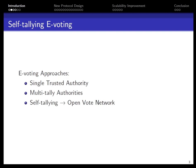Using e-voting systems can be crucial in many situations. For example, the current COVID-19 pandemic renders traditional paper-based voting as a potential health hazard, and sometimes not possible because of the work-from-home setup. There are three tallying approaches for e-voting: single trusted authority, multi-tally authorities, and self-tallying, where there is no need for any trusted authority because once all votes are cast, anyone observing the protocol can tally the result. The OpenVote network belongs to this type.